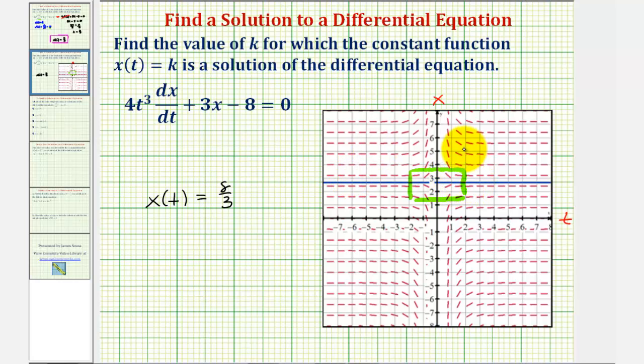So this slope field does verify that x(t) = 8/3 would be a solution to our differential equation. But it also shows us that this is the only constant function that would satisfy the differential equation. All the other solutions would not be constant functions, and we can tell this by the way the slope field behaves.